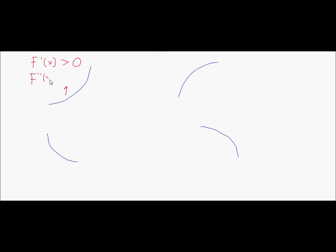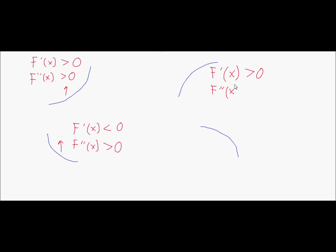If a function is increasing, then f prime of x is positive, and it's concave up because it's a bowl opening upward, so f double prime of x is also positive. Here the function is decreasing but still concave up, so f prime of x is negative but f double prime is positive. Over here it's increasing so f prime is positive but concave down, so f double prime is negative. And here it's decreasing and concave down, so f prime is negative and f double prime is also negative.